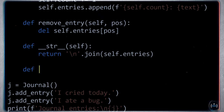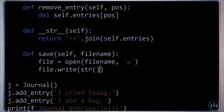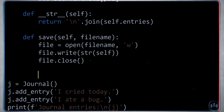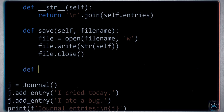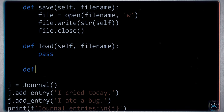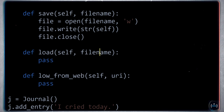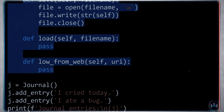For example, we'll give it an ability to save itself — a method called save which takes a file name, opens the file for writing, writes the string representation, and closes the file handle. You might also think it's a good idea to add a load method from a file name, and maybe load_from_web given a URI. The problem is that we've added a secondary responsibility: the journal now takes on persistence by providing functionality for saving and loading — and this is a bad idea.